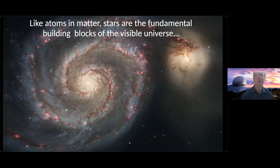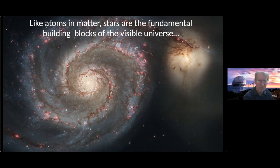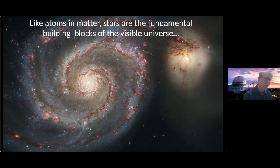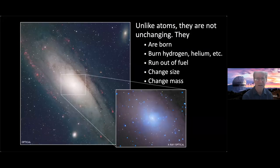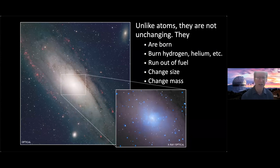Just like atoms are the building blocks of all matter in the universe, stars are kind of the building blocks of everything we see. When we look at a galaxy, the light we're seeing is mostly coming from the stars. Where it's brighter, there's more stars. When Galileo first took a telescope and looked at the Milky Way, he realized it's full of stars. Stars aren't exactly like atoms though — all hydrogen atoms are the same, but all stars are a little bit different. They have different masses, different chemicals, different ages, and they change as they age.